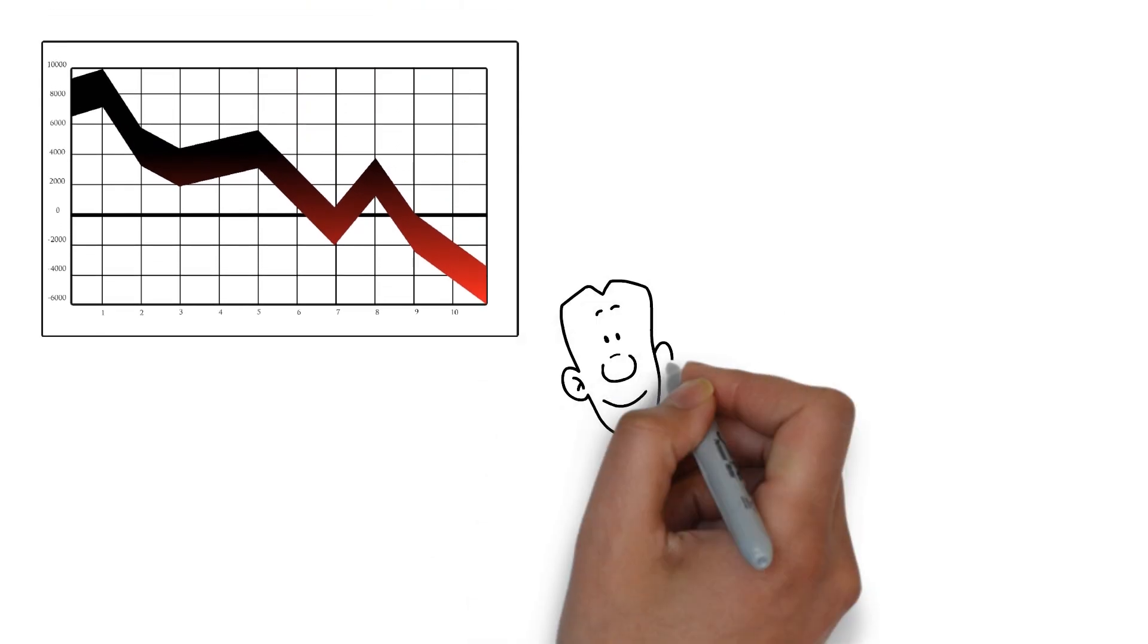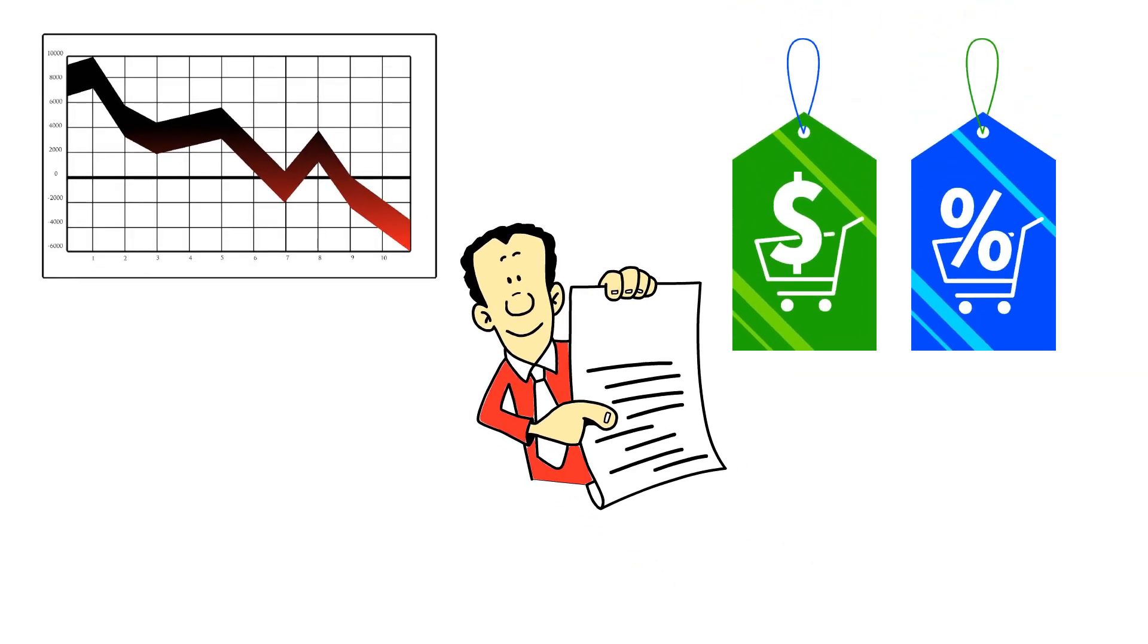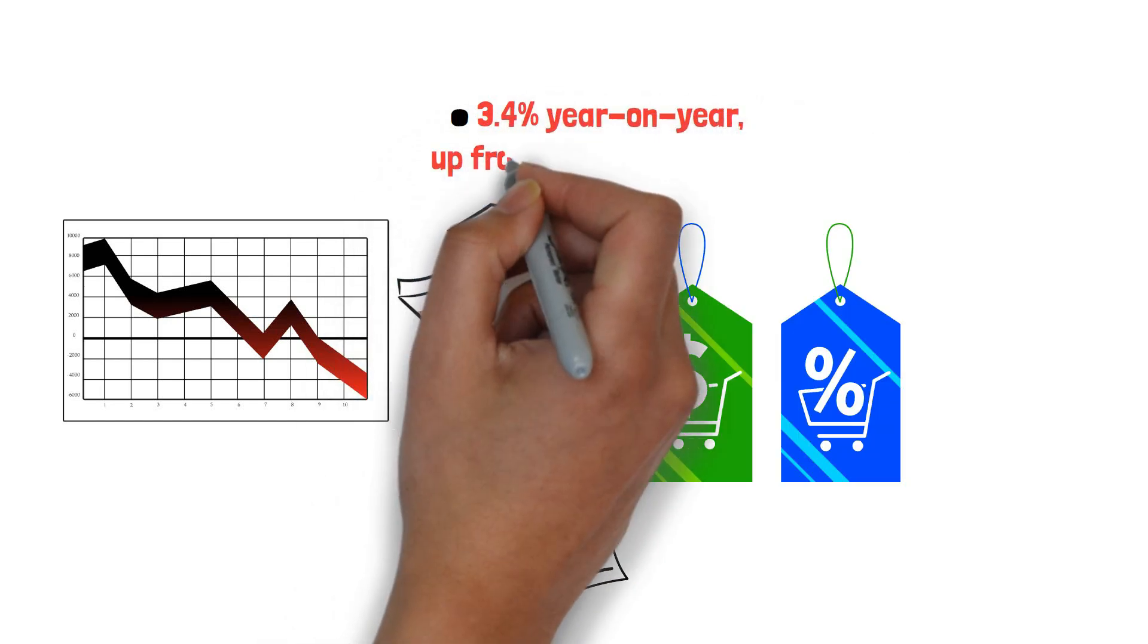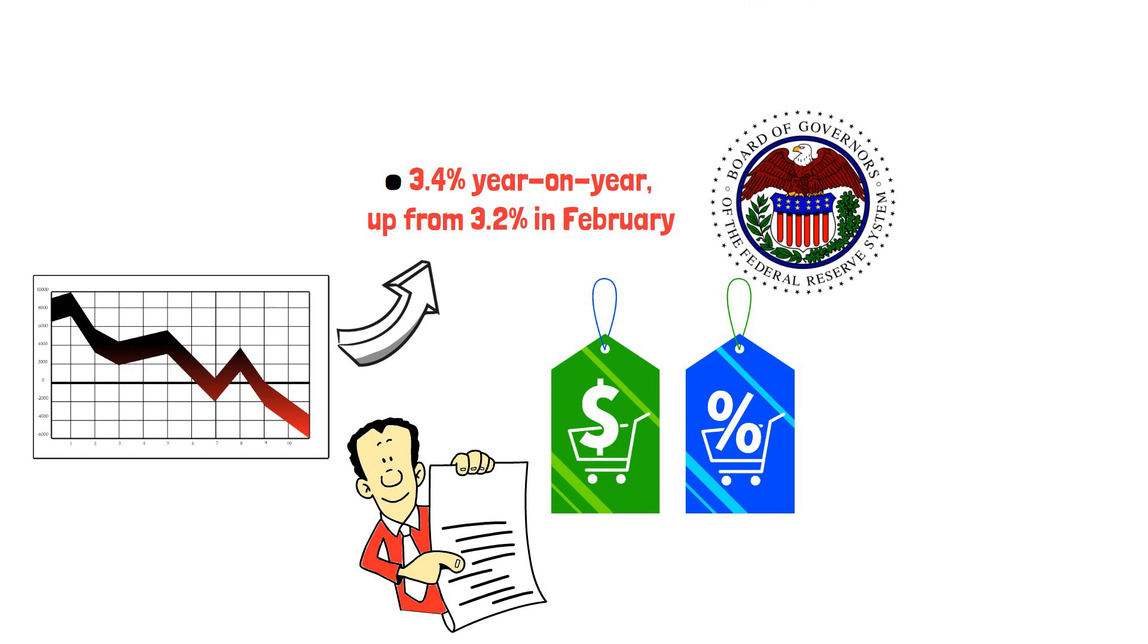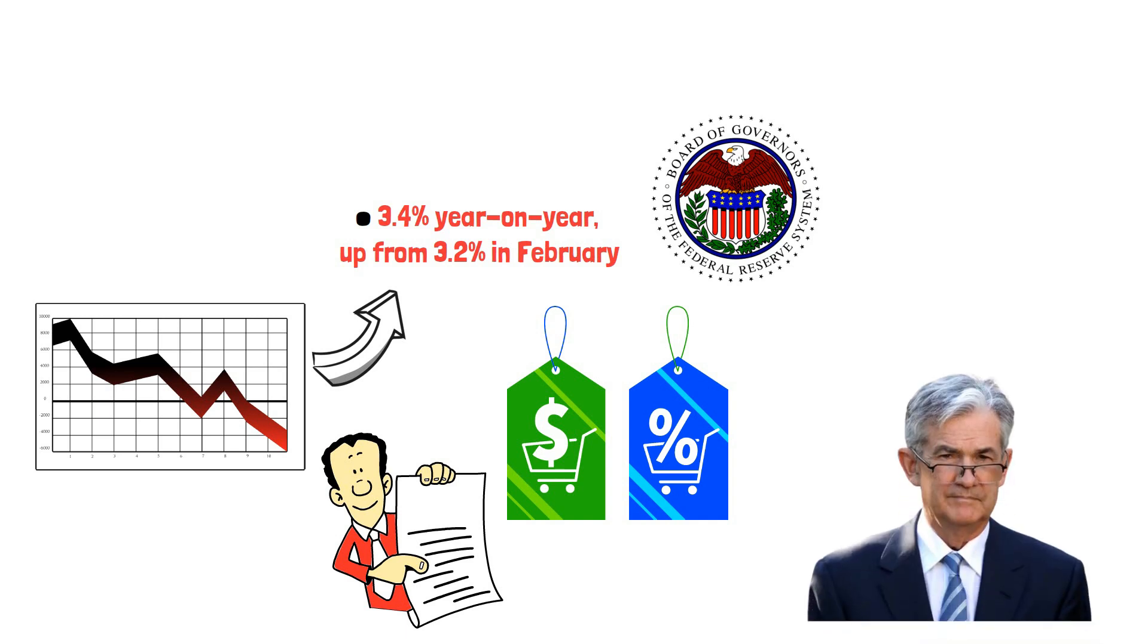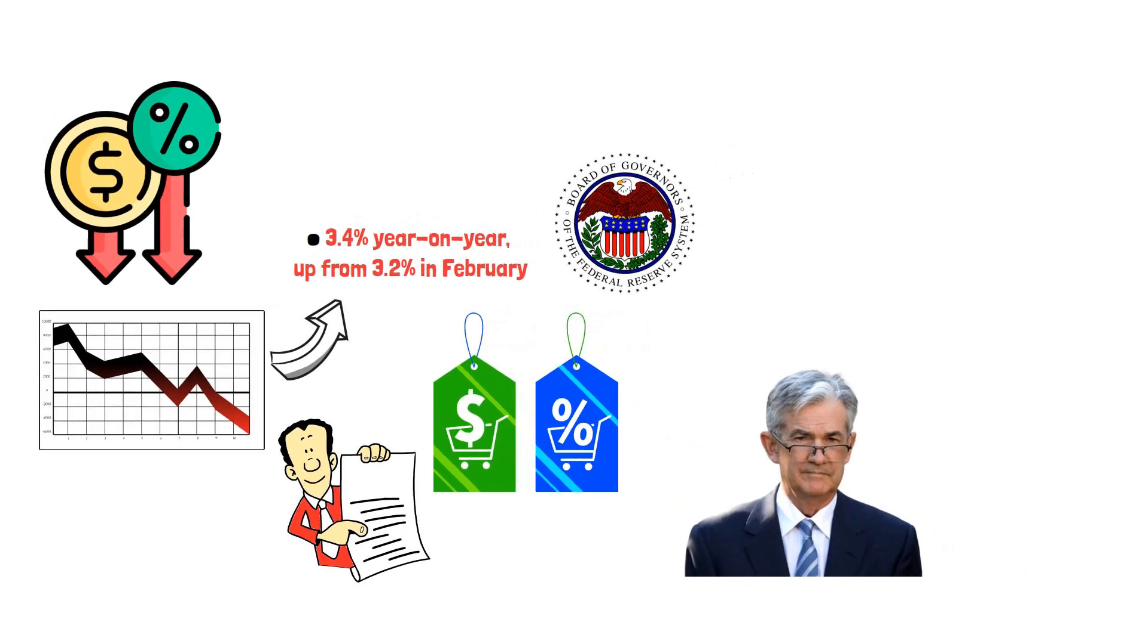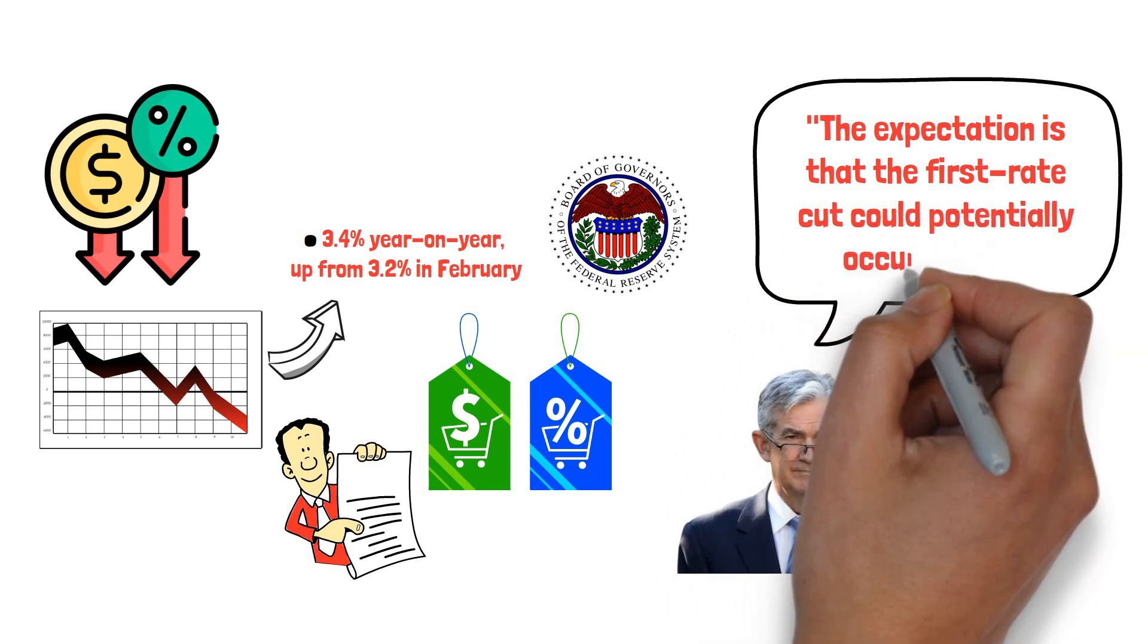Inflation figures are another crucial factor in this discussion. The latest U.S. inflation figures are due to be published soon, with the Consumer Price Index measure of inflation expected to rise to 3.4% year-on-year, up from 3.2% in February. Federal Reserve Chair Jay Powell has indicated that if the economy evolves as expected, it's likely that the policy rate will be lowered at some point this year. The expectation is that the first rate cut could potentially occur in June.